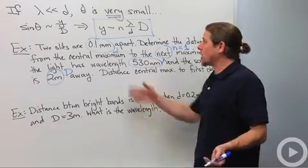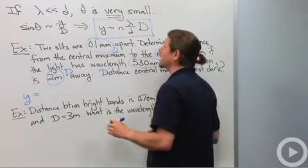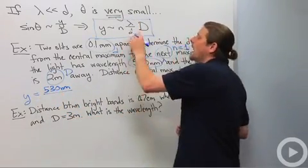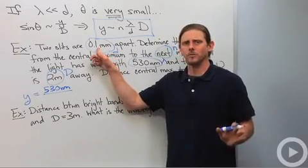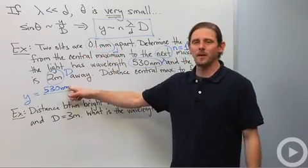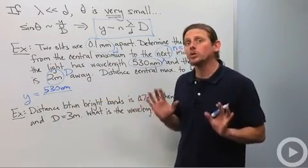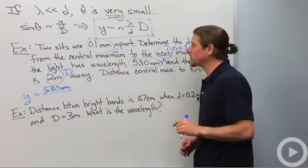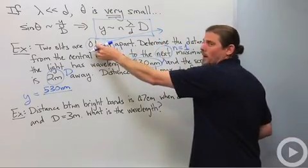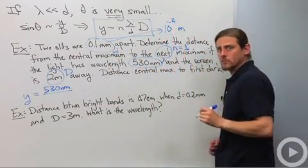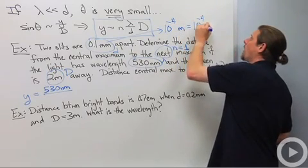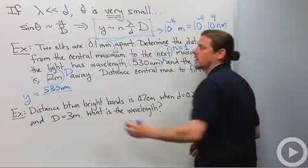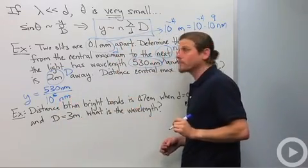So all we need to do is determine y. So y equals approximately 1 times 530 nanometers divided by... Now this distance d is 0.1 millimeters. But I've got nanometers up here. So let's try to fix that. What we're going to do is we're going to express this first in terms of meters. And then we'll express it in terms of nanometers. So this is 0.1 millimeters, so it's 10 to the minus 4 meters. So that's 10 to the minus 4, 10 to the 9 nanometers. So it's 10 to the 5 nanometers.